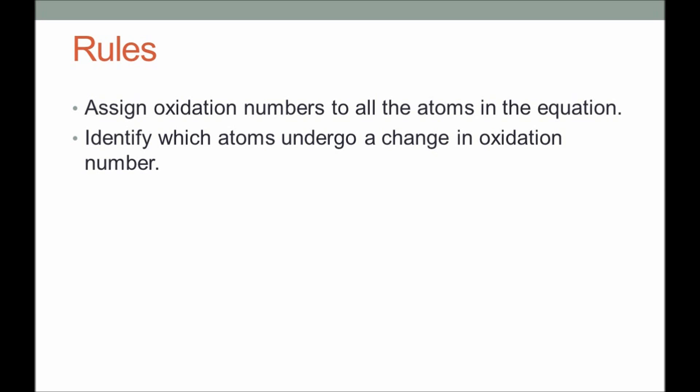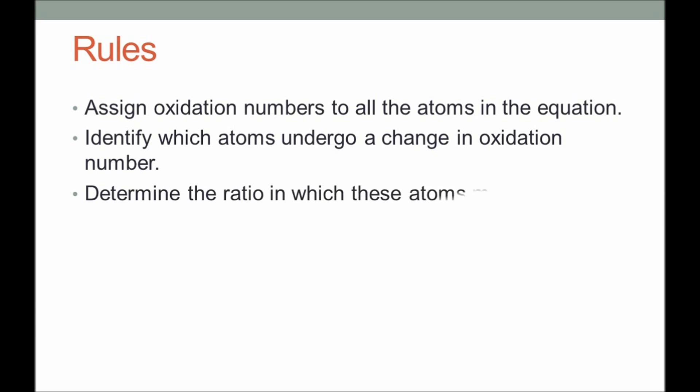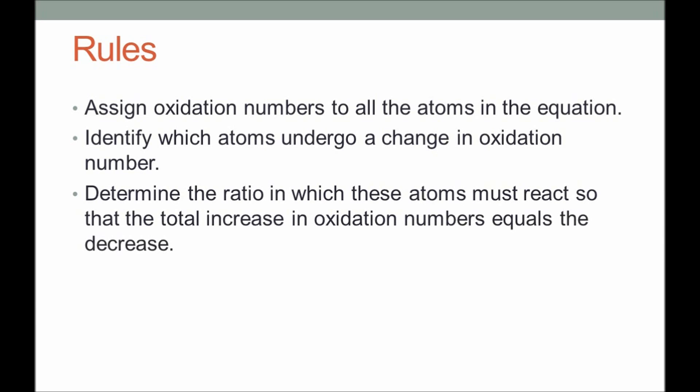The second thing to do is identify those atoms that undergo a change in oxidation number. That helps us determine which elements are undergoing oxidation and which are undergoing reduction. Once we know how many electrons are lost and how many are gained — the increase or decrease in oxidation number — balancing is about making the electrons lost in the oxidation half-reaction equal to the electrons gained in the reduction half-reaction.